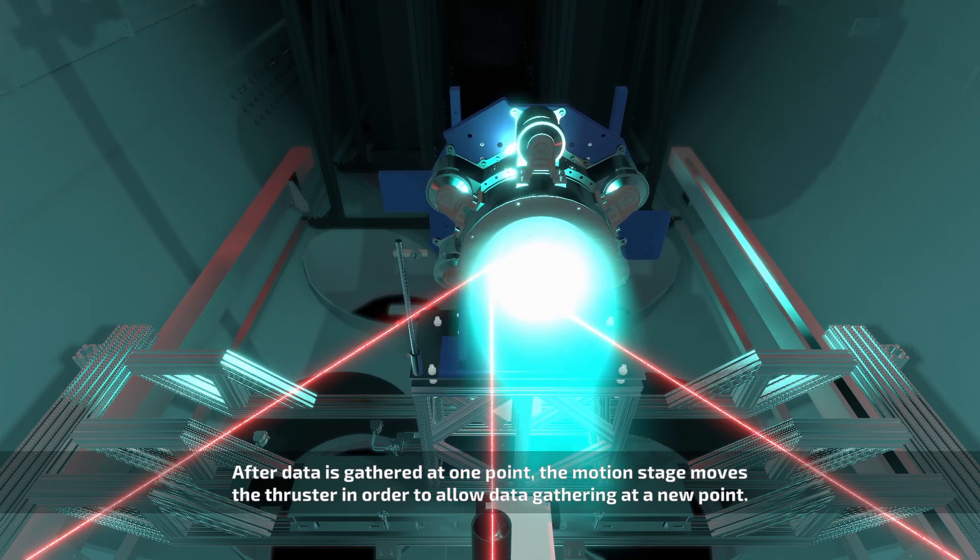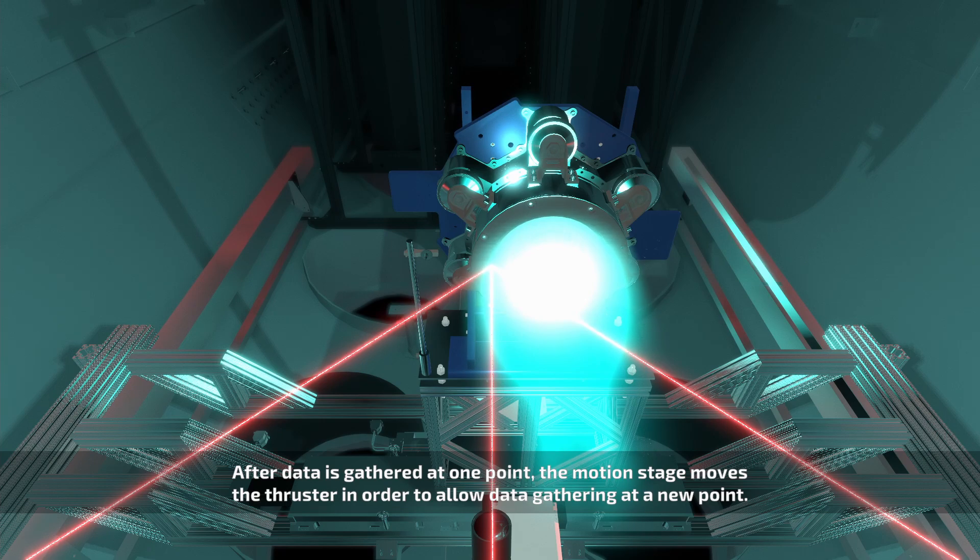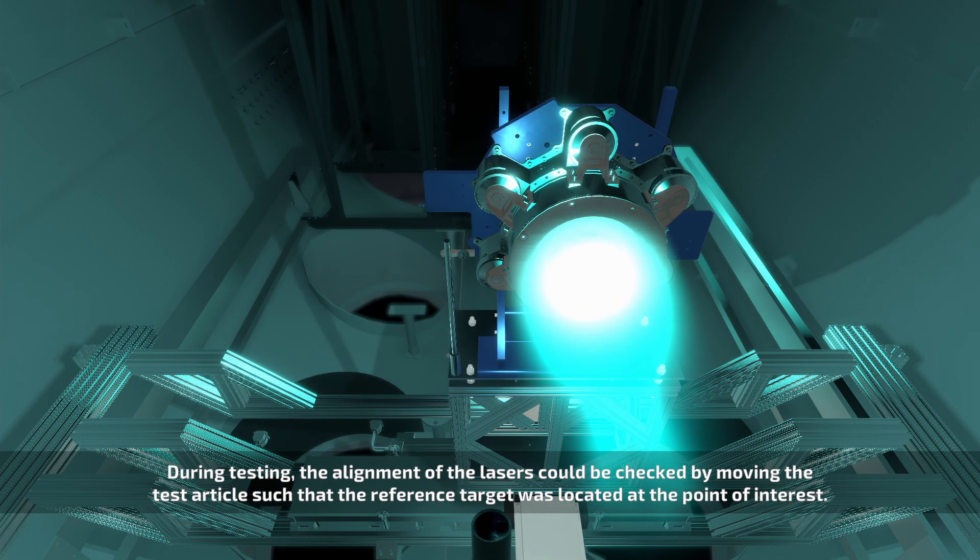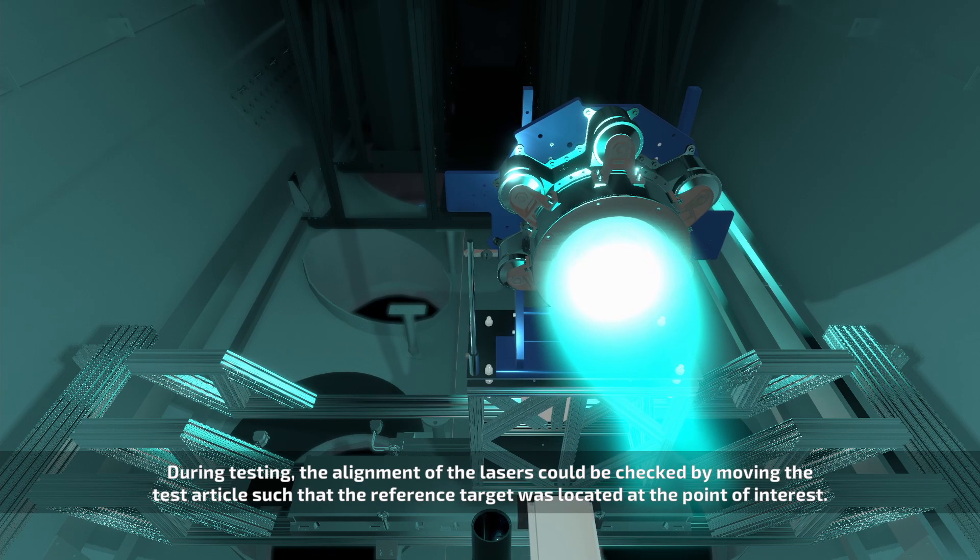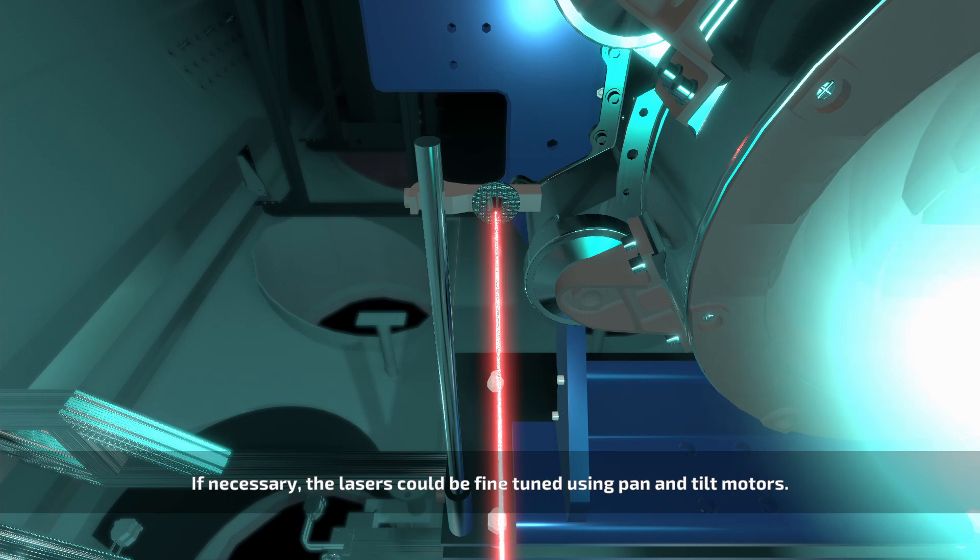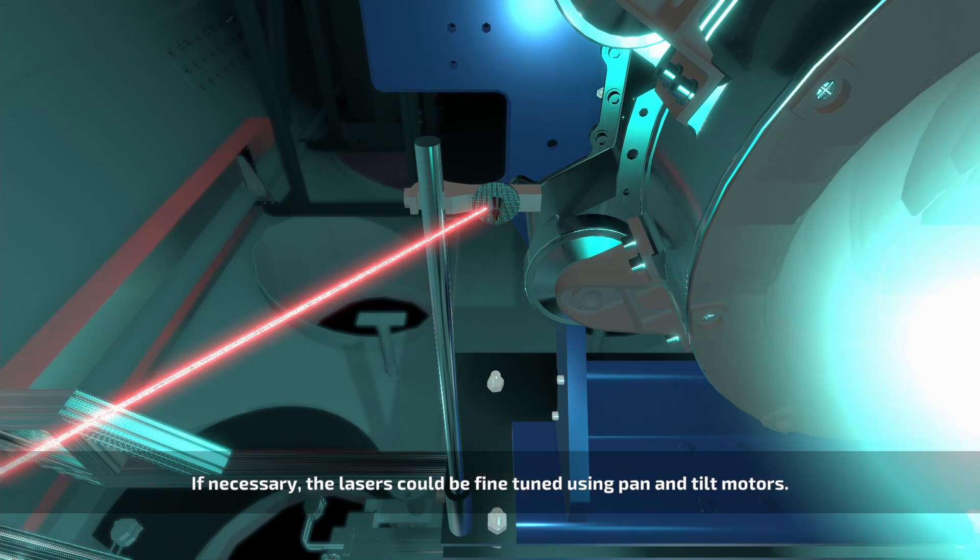Fluorescence emitted by the xenon ions is gathered by the collection optics. During testing, the alignment of the lasers could be checked by moving the test article such that the reference target was located at the point of interest. If necessary, the lasers could be fine-tuned using pan and tilt motors.